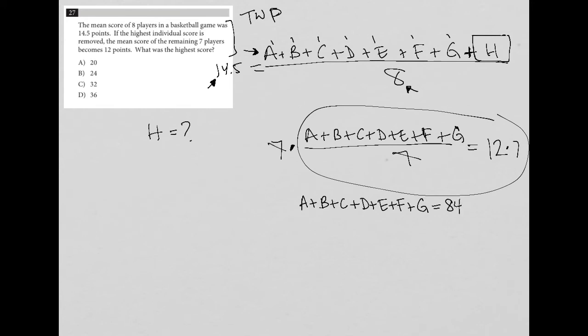And now this is very valuable because I have this up here, right? It's the same a plus b, c, d, e, f, g. So I can replace that with 84. So going back up to my original fraction here, I'm going to replace this with 84.